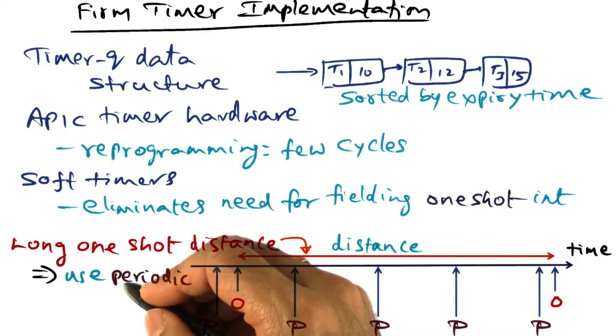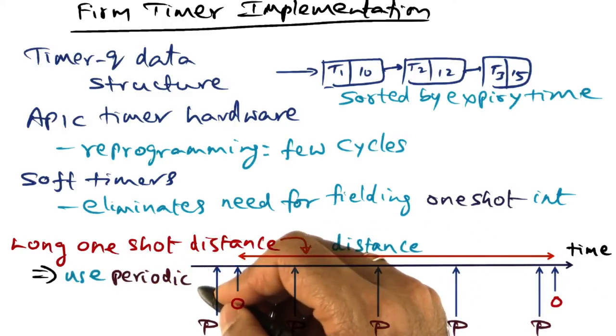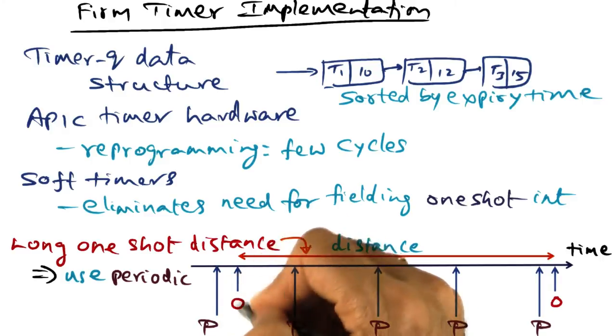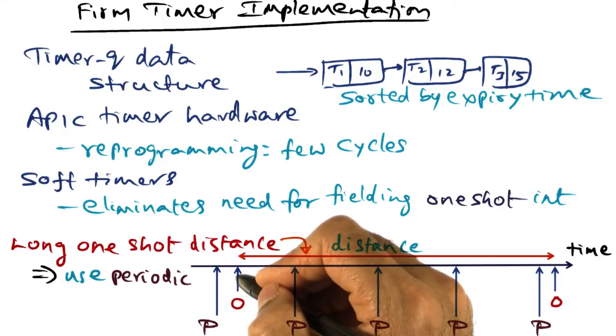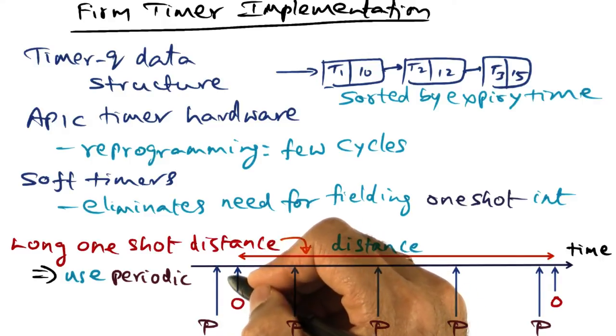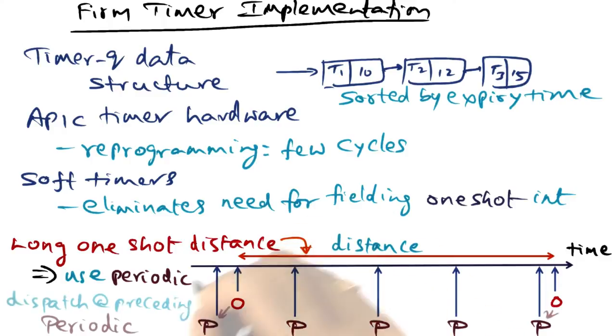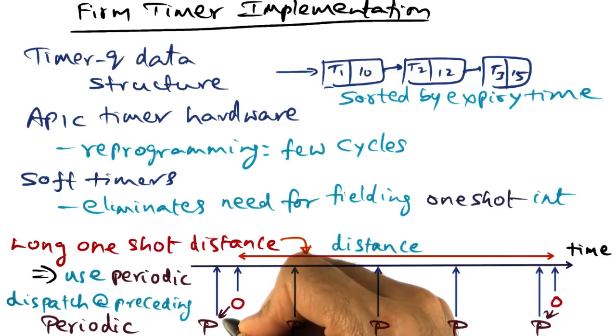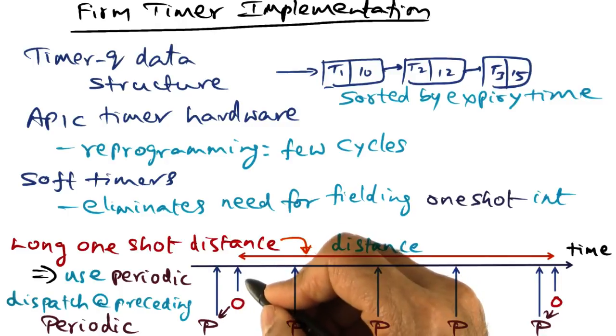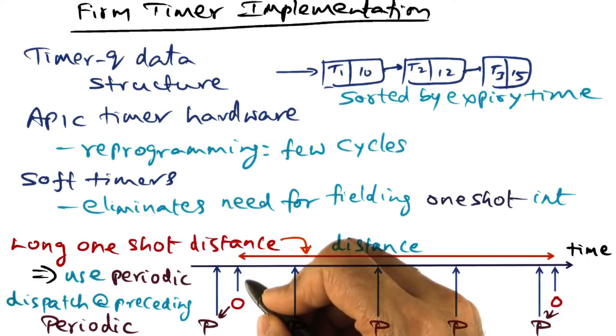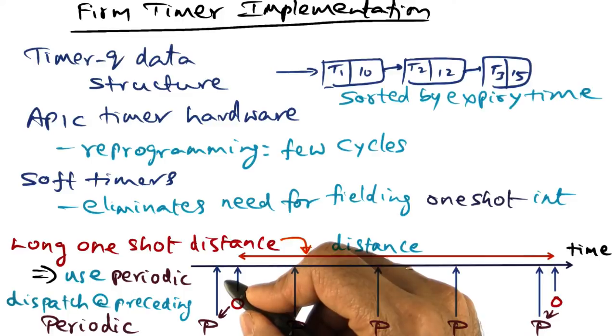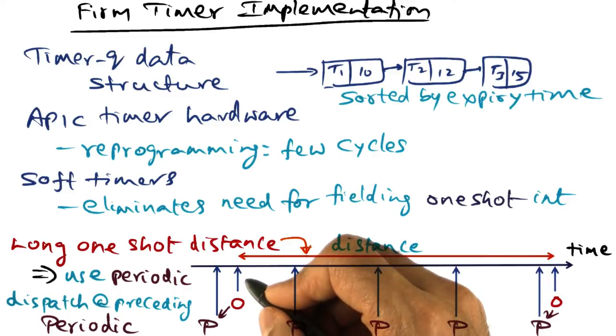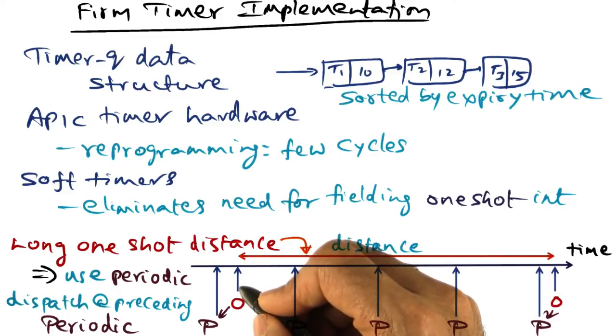This suggests that if periodic events are going to go off, and if it is close enough to a one-shot timer that would have gone off, why not take advantage of that? So we want to dispatch a one-shot event at a preceding periodic event. The key thing for time sensitivity is not missing the timer event. If you're going to process it a little bit sooner, that's okay.